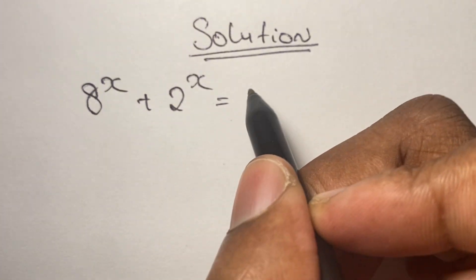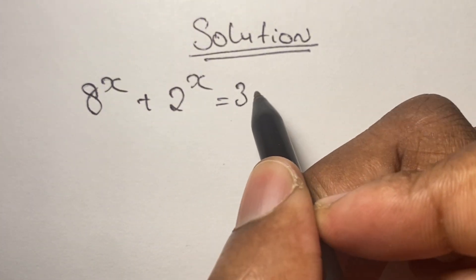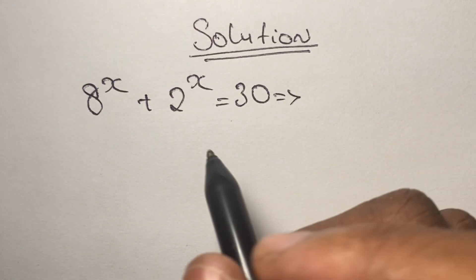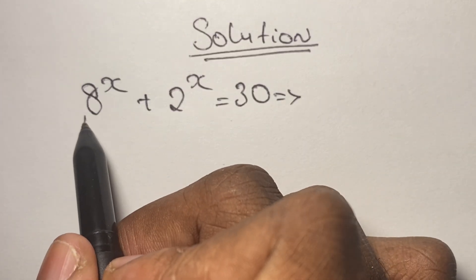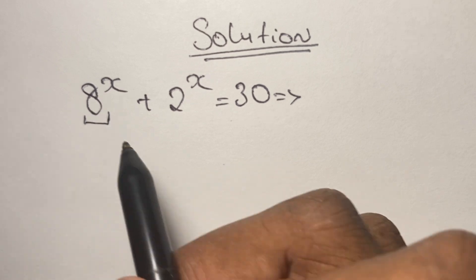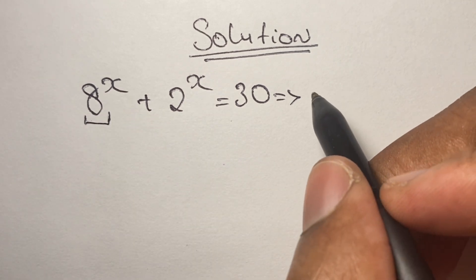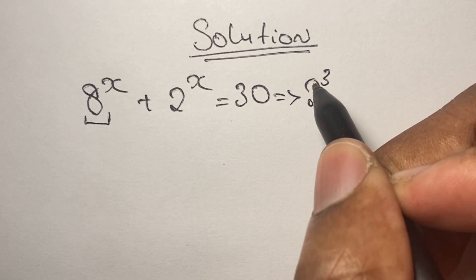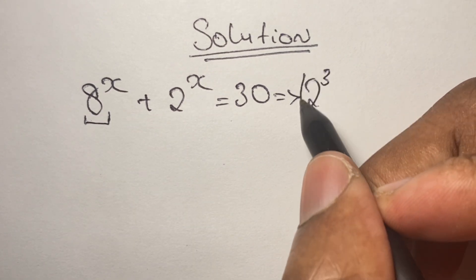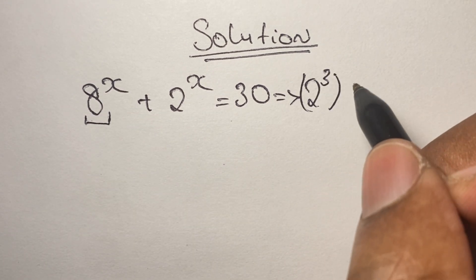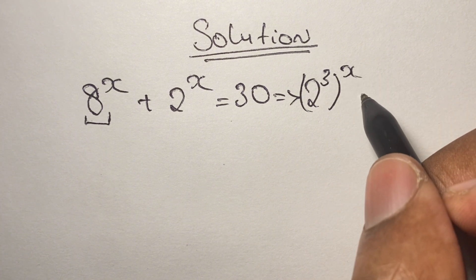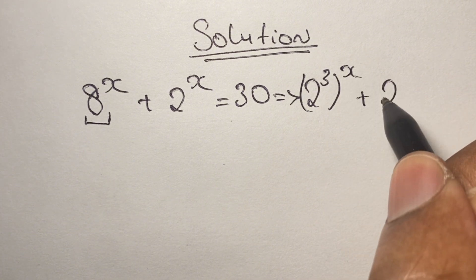Alright, let's look at our solution. We have 8 to the power of x plus 2 to the power of x is equal to 30. We can simplify 8 to the power of x as 2 to the power of 3, in brackets powered by x, and then we have plus 2 to the power of x is equal to 30.